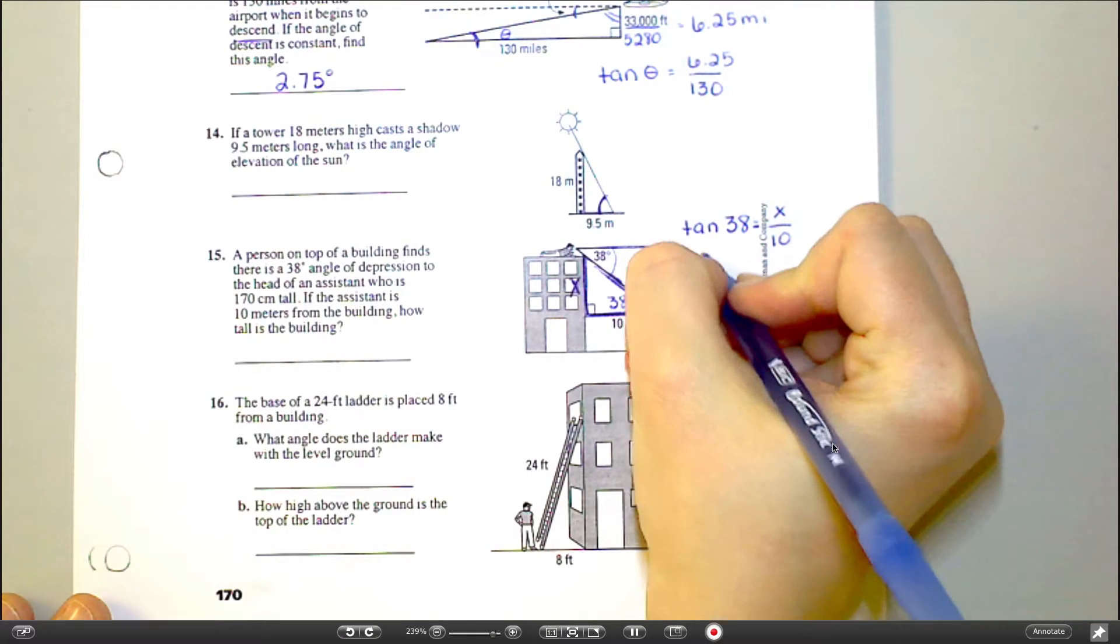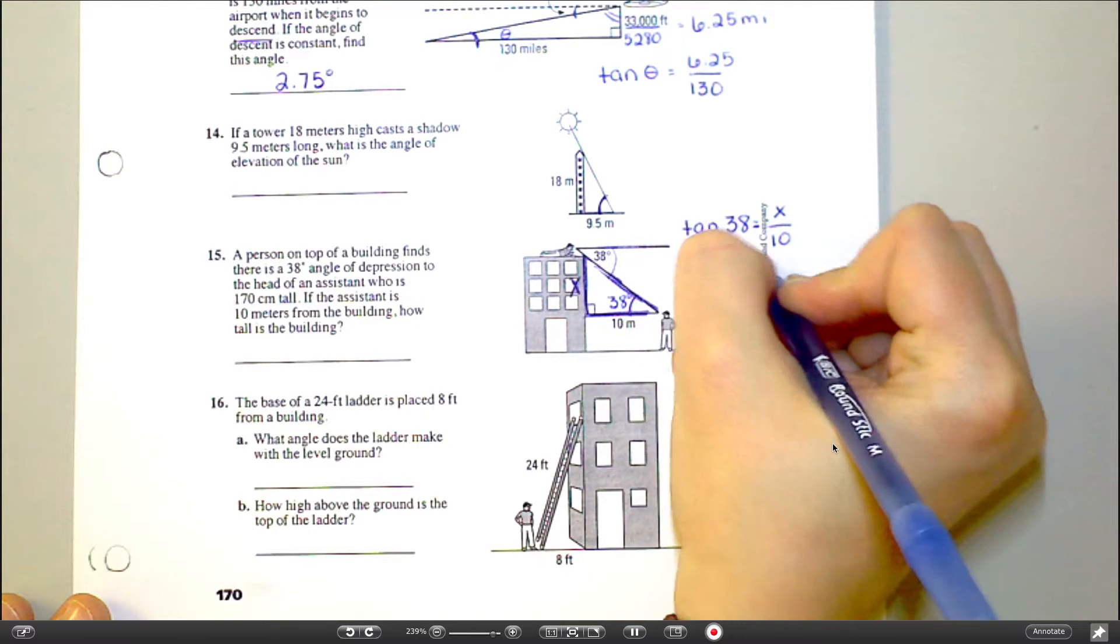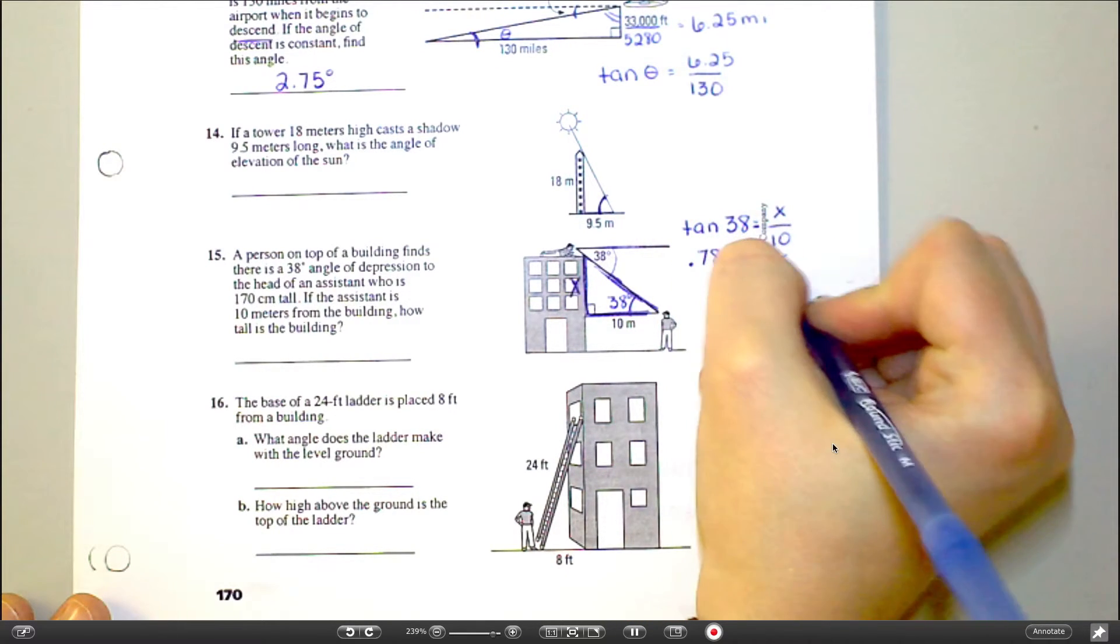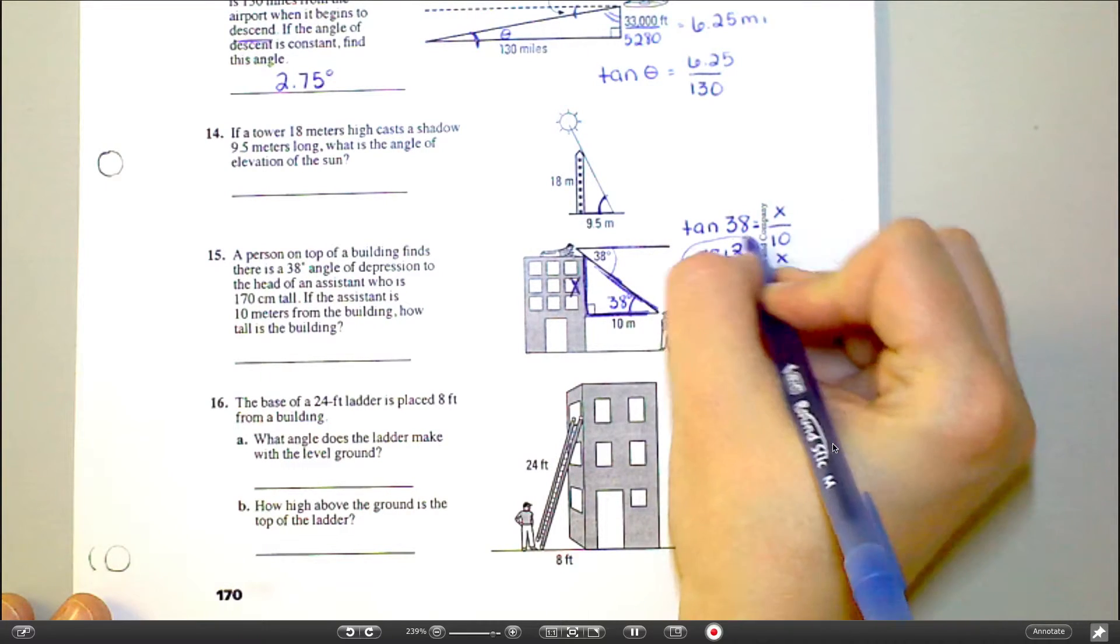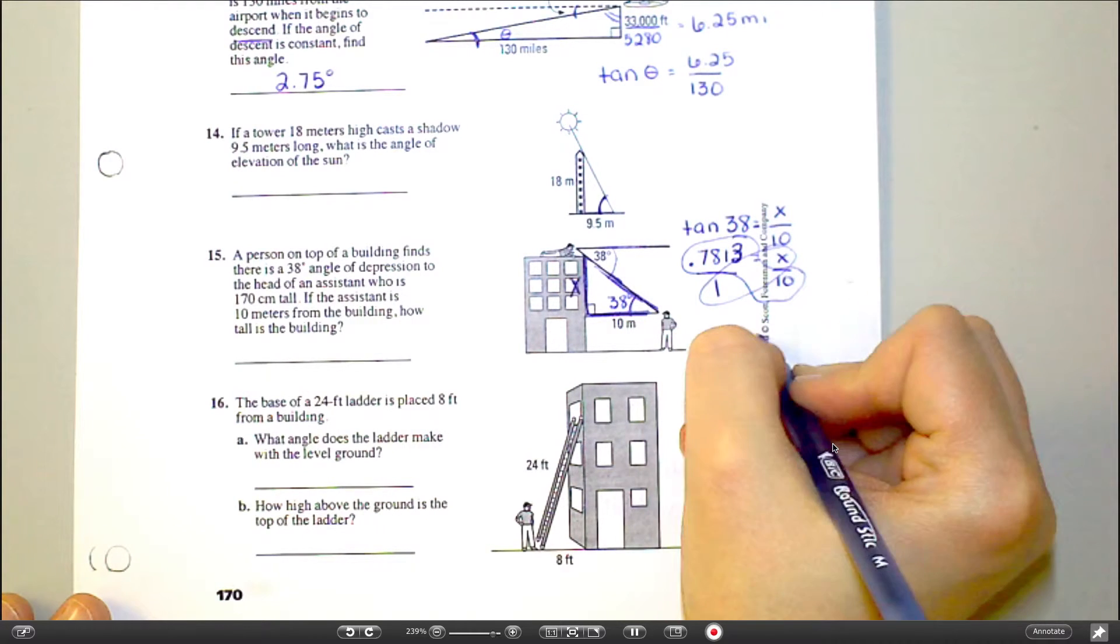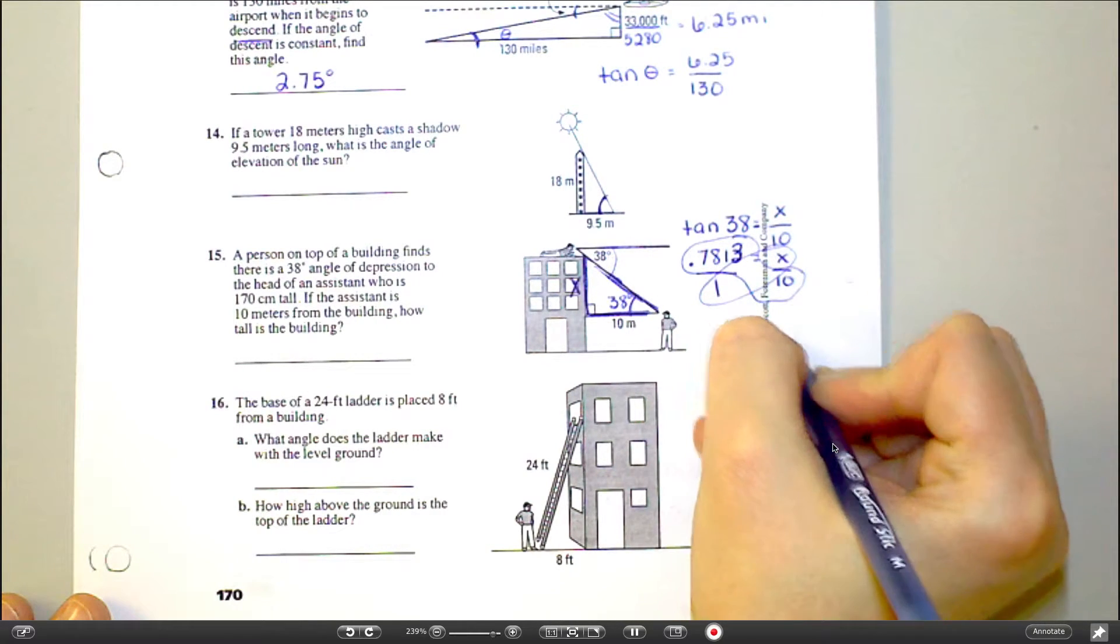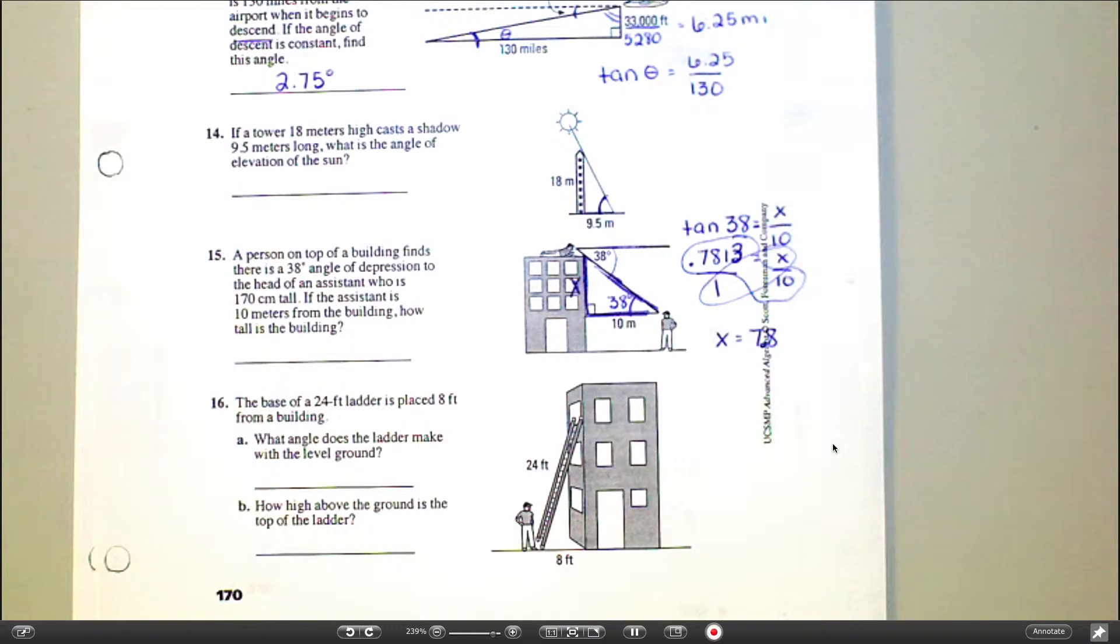Equals x over 10. Can you help me with tan of 38? Four decimal places, please. Point seven, eight, one, three. Equals x over 10. Put that over 1, and let's cross multiply. And you end up with x equals 7.8. I was doing 100, not 10. Now, is that my final answer? No.